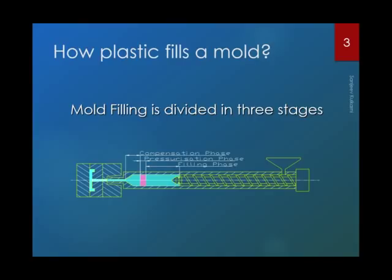When the cavity is about 94 to 98% filled, due to the viscoelastic nature of the polymer melt, the cavity is pressurized and sufficient pressure is available. The movement of the screw stops and slowly creeps until complete filling occurs. This phase is called the pressurization phase.